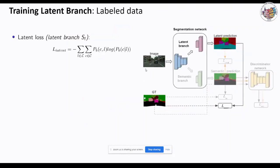Starting with the latent branch: it is trained using only labeled data. The goal is to group the semantic classes into latent classes in a data-driven way, so that the small fraction of annotated images is enough to solve the resulting simpler task accurately. Without any constraints, this would result in a single latent class, allowing 100% accuracy trivially. To avoid this, we propose to optimize the conditional entropy loss, which ensures that the latent classes contain as much information as possible about the semantic classes.